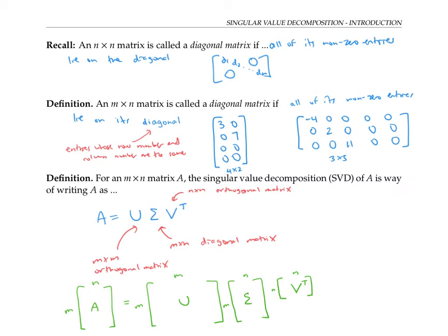The singular value decomposition has some features similar to the diagonalization of a matrix, namely that the middle matrix Σ is diagonal, and it's a product of three matrices. In fact, since V is orthogonal, V transpose is the same thing as V inverse, so we could write this as U times Σ times V inverse. This has something in common with the diagonalization of a symmetric matrix, because the two matrices on the outside, U and V, are orthogonal matrices.